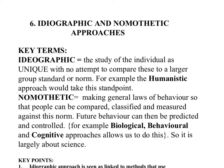Nomothetic means making general laws of behavior so that we can compare people, classify people, and measure their behavior against a norm. So it's not that everybody is unique — everybody is unique, but they can and should be classified. In the ideographic approach, by contrast, there is no need to classify you because you are unique and cannot be compared to anybody else.